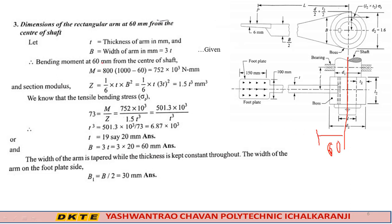Dimensions of the rectangular arm at 60 mm from the center of the shaft. The bending moment M equals 800 × (1000 - 60) equals 752 × 10³ N-mm. The section modulus Z equals 1/6 × t × b² equals 1/6 × t × (3t)² equals 1.5t³ mm³.